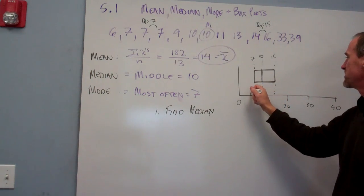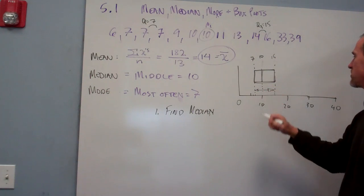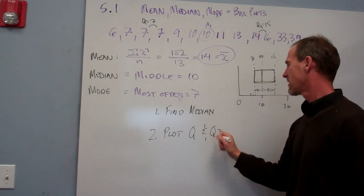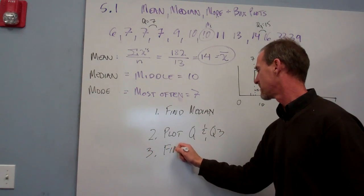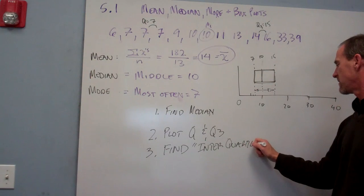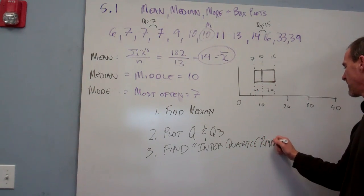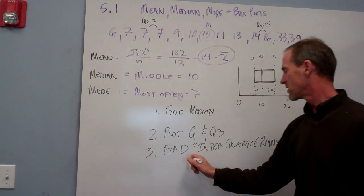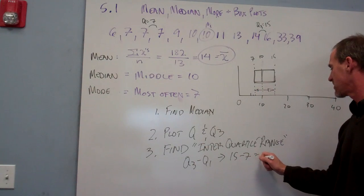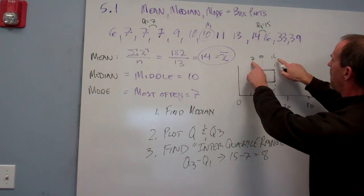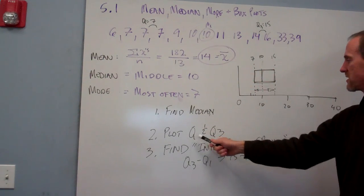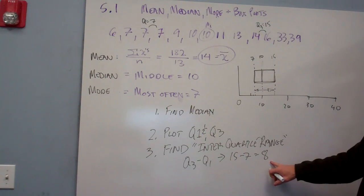Plot Q1 and Q3, and then step three is find what's called the interquartile range, IQR. That is just a matter of subtracting Q3 minus Q1, which in this case is 15 minus 7 equals 8. So the range between Q1 and Q3 is simply 8. It's a pretty simple concept—what's the numerical difference between my Q3 and Q1?